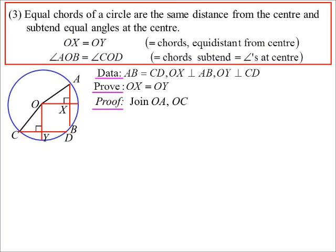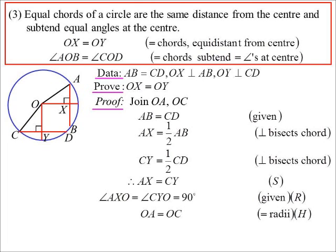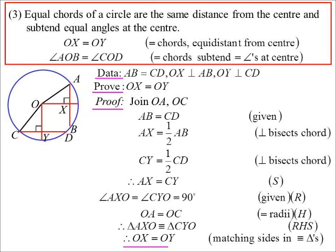Drawing radii creates triangles. AB equals CD (given). AX equals half of AB because the perpendicular from the center bisects the chord, so AX equals CY. Both are right angles, and OA and OC are radii. By right-angle-hypotenuse-side, OX equals OY. That proves equal chords are equidistant from the center.